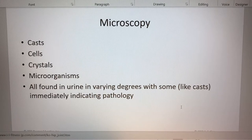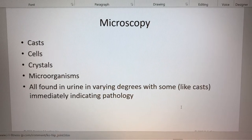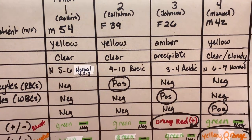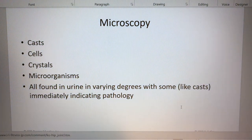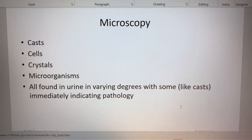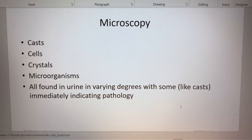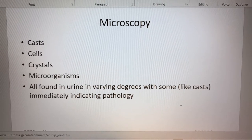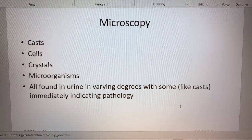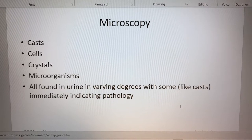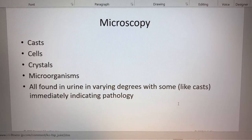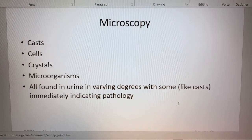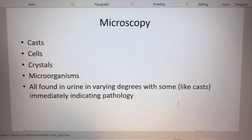Let's review some of the other parameters we'll be adding to our list of each patient's presentation. We can talk about microscopy in terms of casts, cells, crystals, or microorganisms, or all of those. Each are found in the urine in varying degrees, but some of them immediately indicate that a pathology is present. So we'll talk about what's normal and what's not normal.